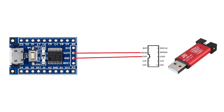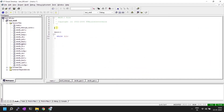Before coding, let's discuss the minimum circuit required for flashing the microcontroller. Only two pins are required: SWIM and Ground. Connect just these two pins between your microcontroller board and the ST-Link V2 programmer and you are ready for flashing.